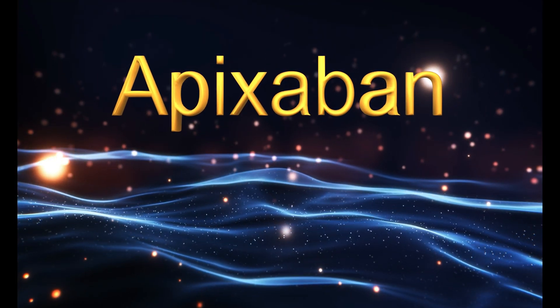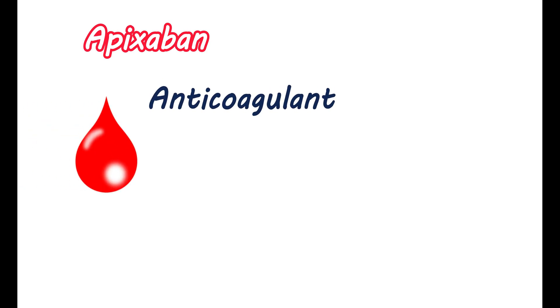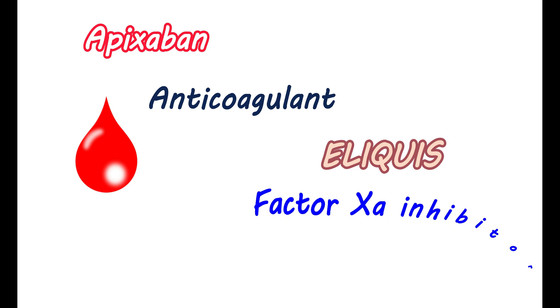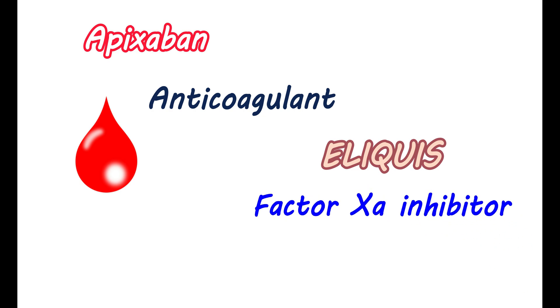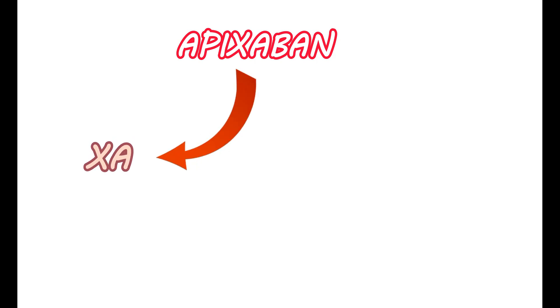In this video, I'm going to talk about apixaban. Apixaban is an anticoagulant that is well known by its brand name, Eliquis. It is classified as a factor Xa inhibitor. Factor Xa plays a key role in the cascade of coagulation and clot formation, and apixaban inhibits the activity of this factor. The term XA may indicate factor Xa, and the term ban may indicate that this medication bans its activity.